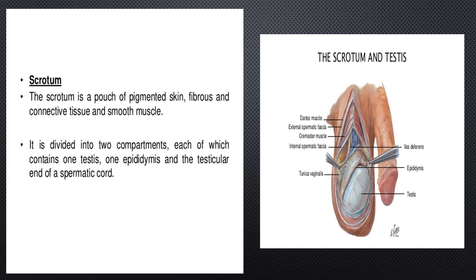The dartos regulates temperature by expanding or contracting to wrinkle the scrotal skin. The cremaster muscle is a thin layer of striated muscle found in the inguinal canal and scrotum, located between the external and internal layers of the spermatic fascia.